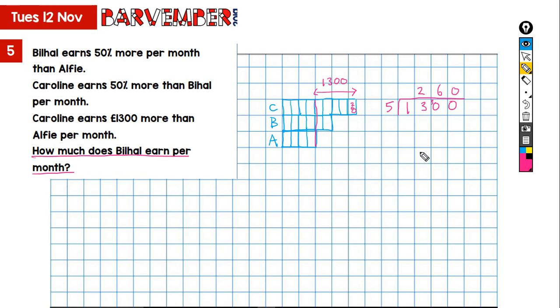So now we're doing 260 times 6. So that gives us 1,560. So how much does he earn per month? 1,560.